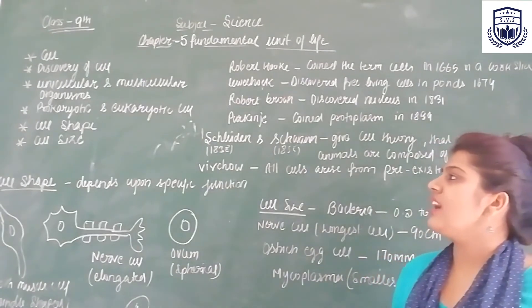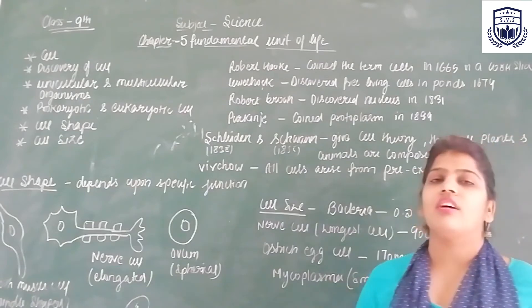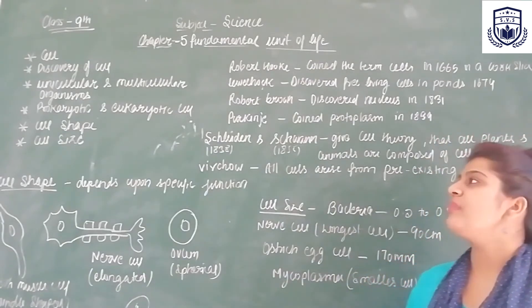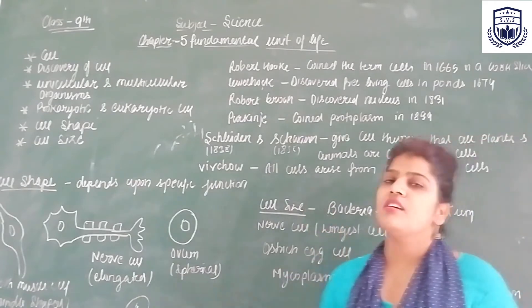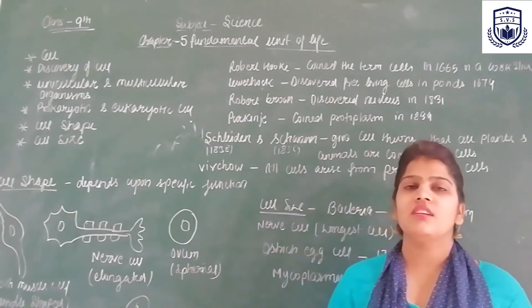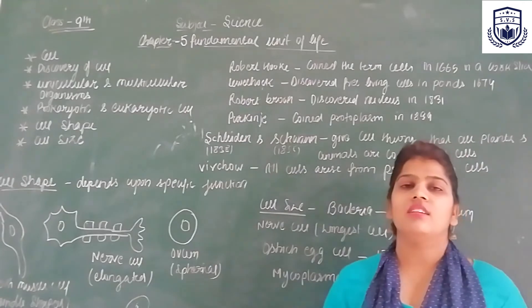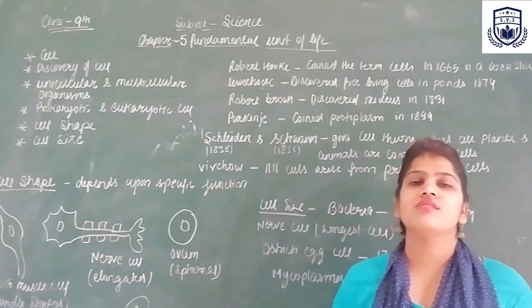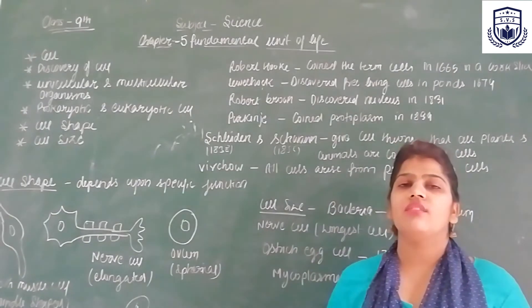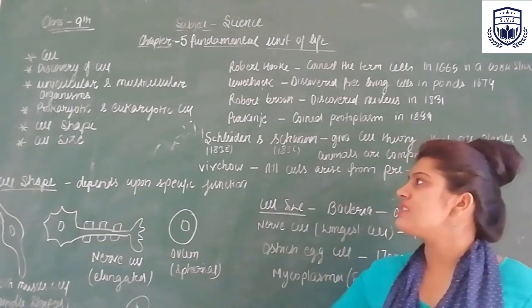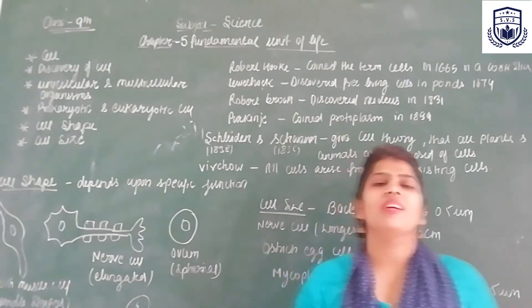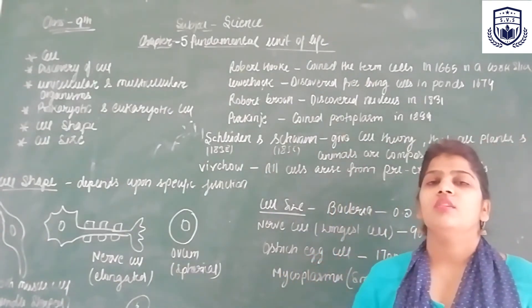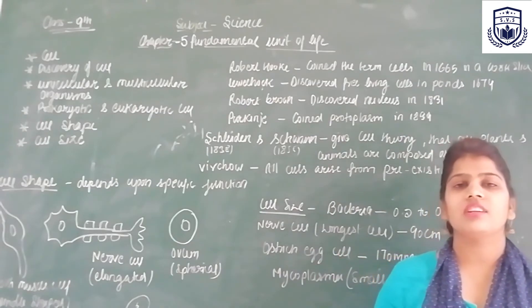Examples: Unicellular organisms में आते हैं paramecium, bacteria वगैरा। Multicellular organisms में आते हैं plants, animals, fungi वगैरा। यह था basic difference unicellular और multicellular organisms के बीच में।